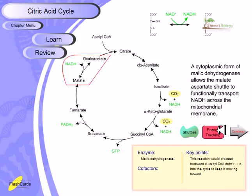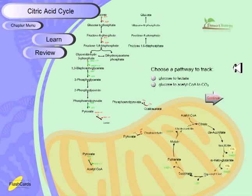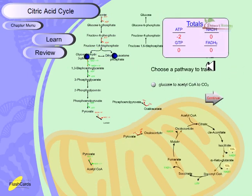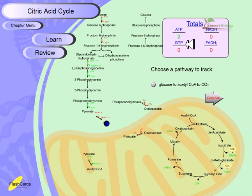In another type of energy tracking — glucose to lactate — we produce only two ATP, no NADH, no FADH2, and no GTP. This shows that fermentation generates very little energy compared to aerobic respiration through the citric acid cycle, which produces two ATPs, two GTPs, ten NADHs, and two FADH2. That's why aerobic respiration is always preferred over fermentation.